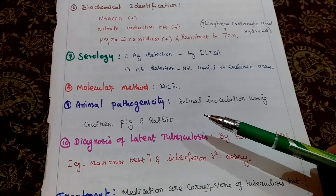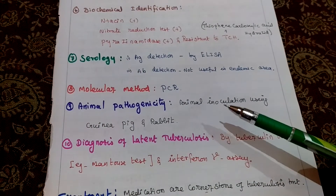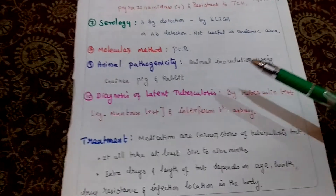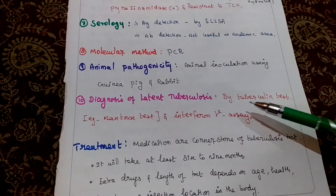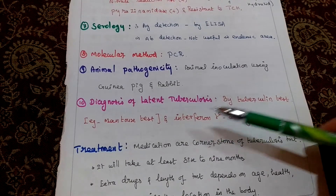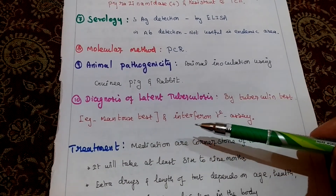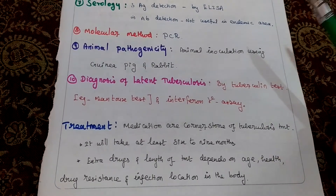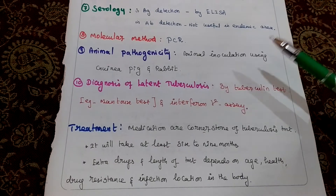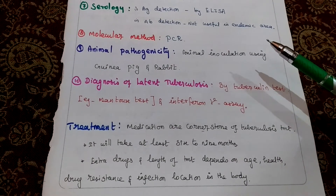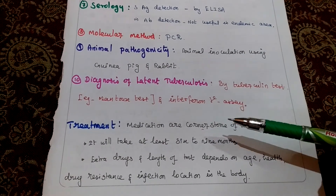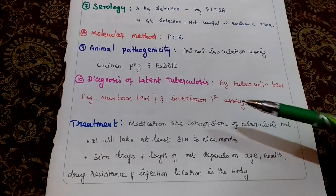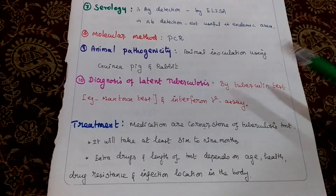Animal pathogenicity testing uses inoculation in guinea pigs and rabbits. For diagnosis of latent tuberculosis, we confirm using the Mantoux test and interferon-gamma release assay. Finally, treatment: medication is the cornerstone of tuberculosis treatment, taking 6 to 9 months. The drugs and length of treatment depend on patient age, health, drug resistance, and infection location in the body.